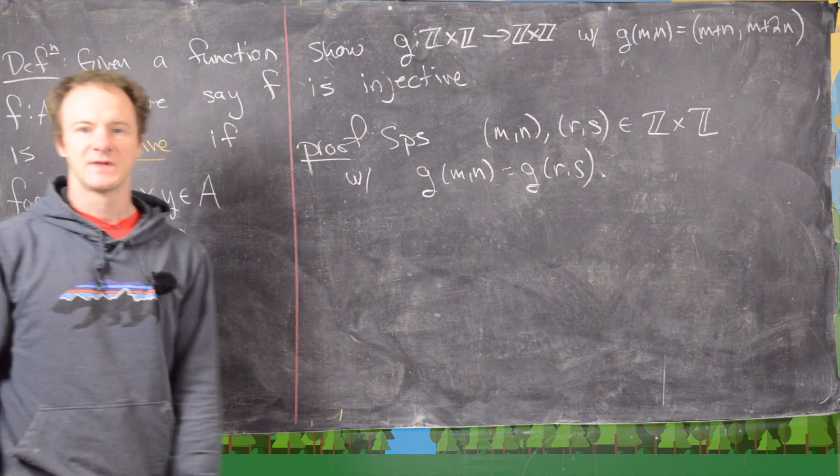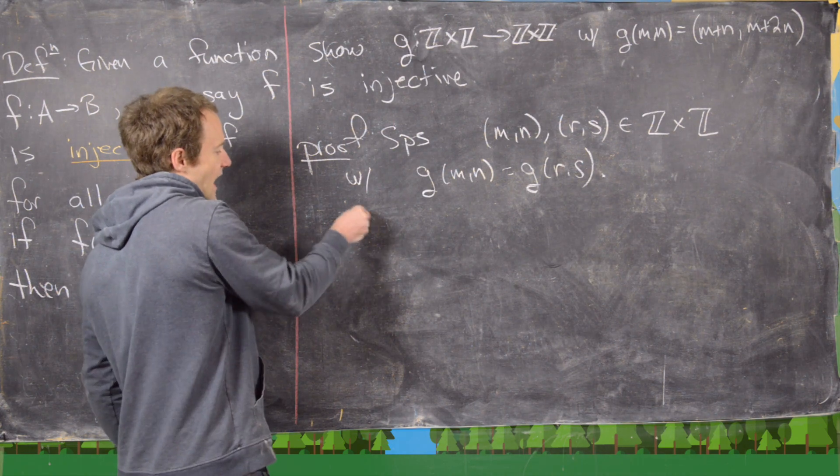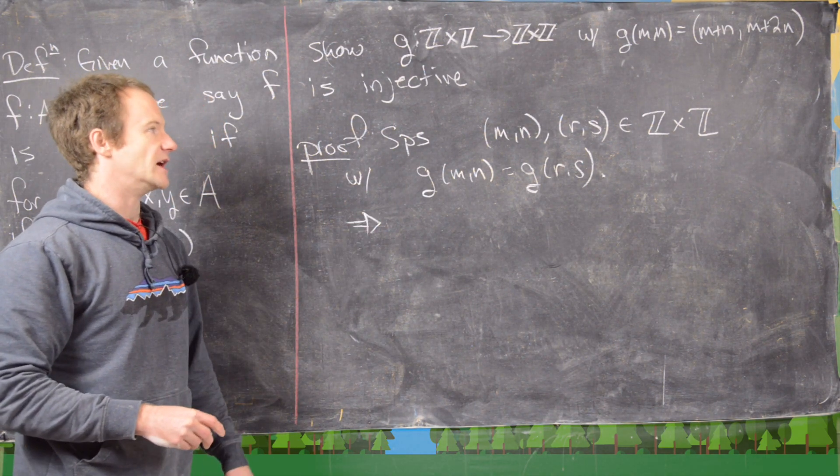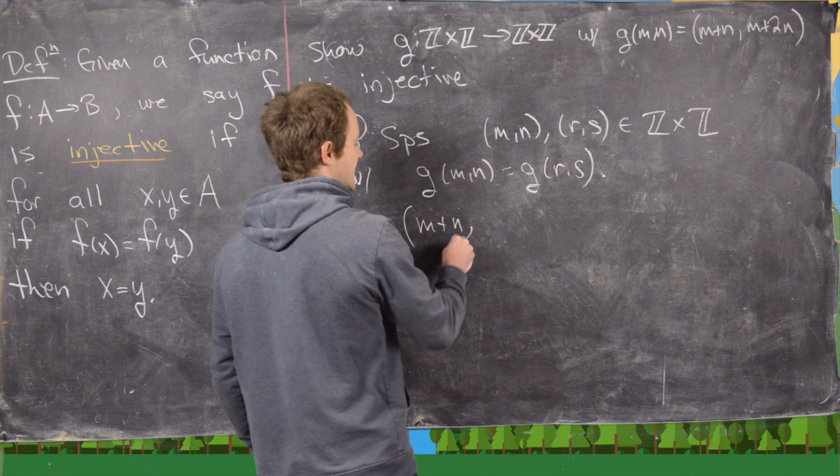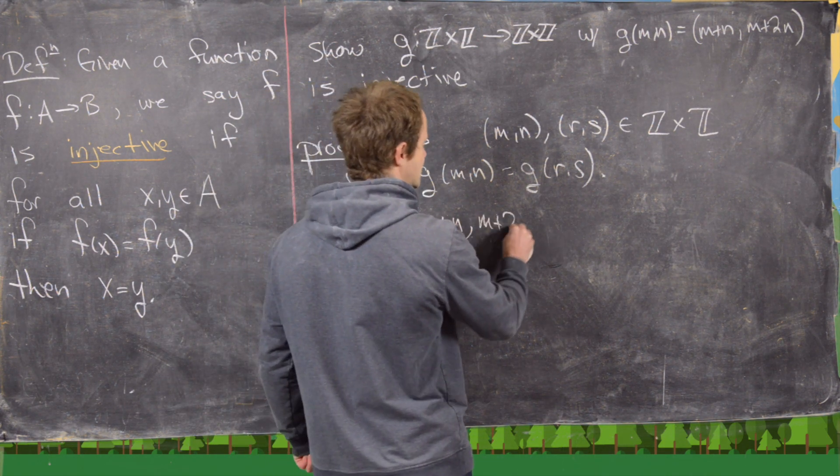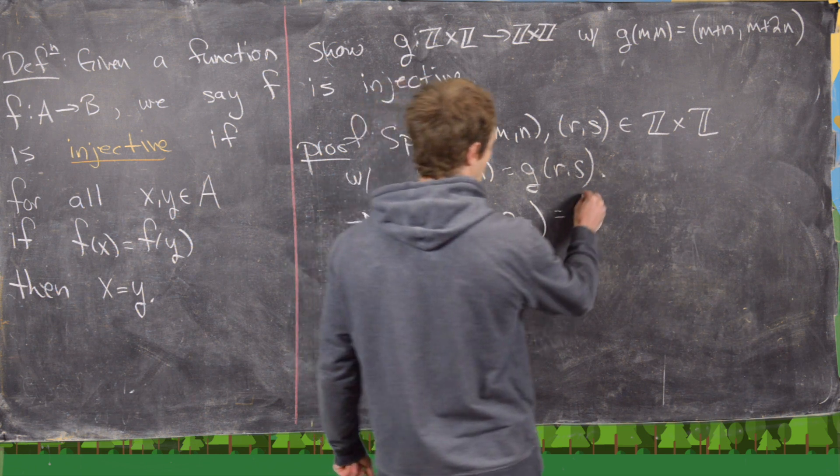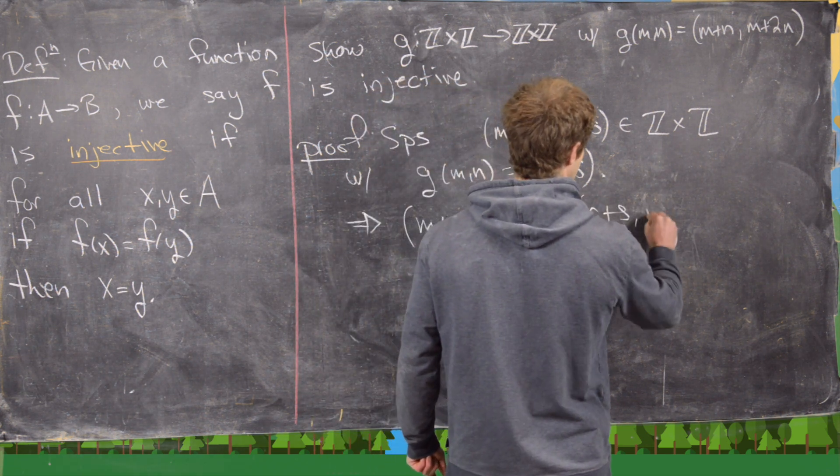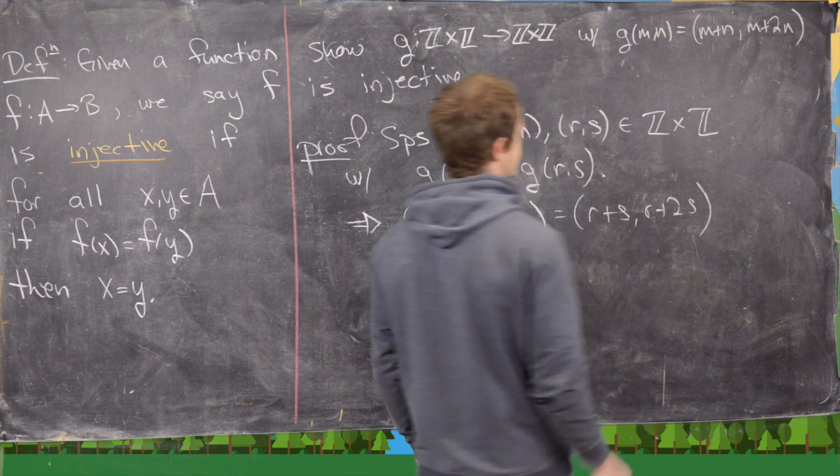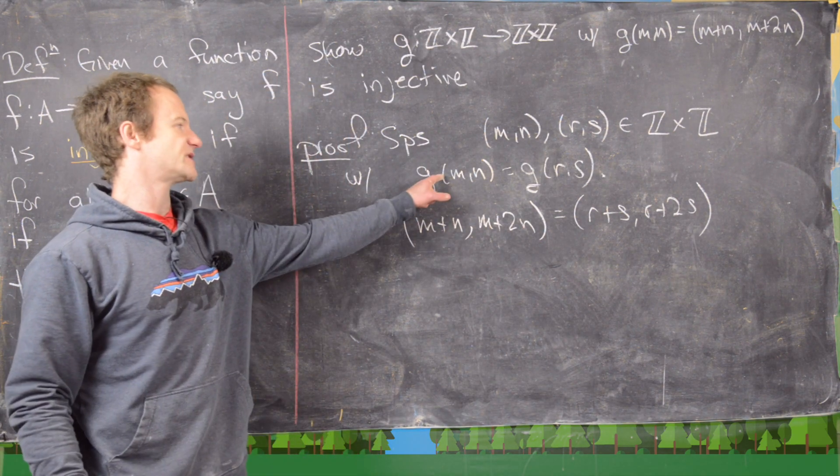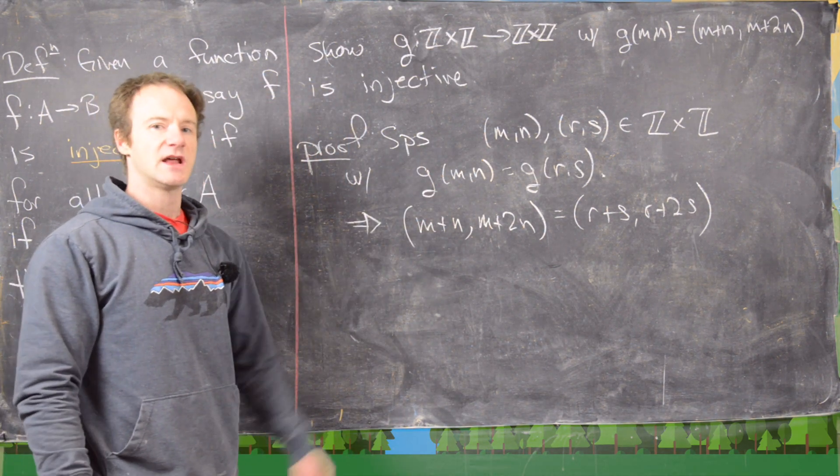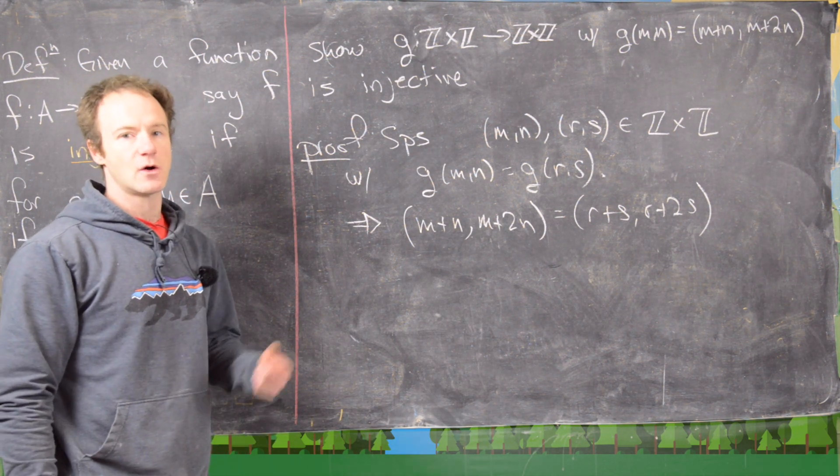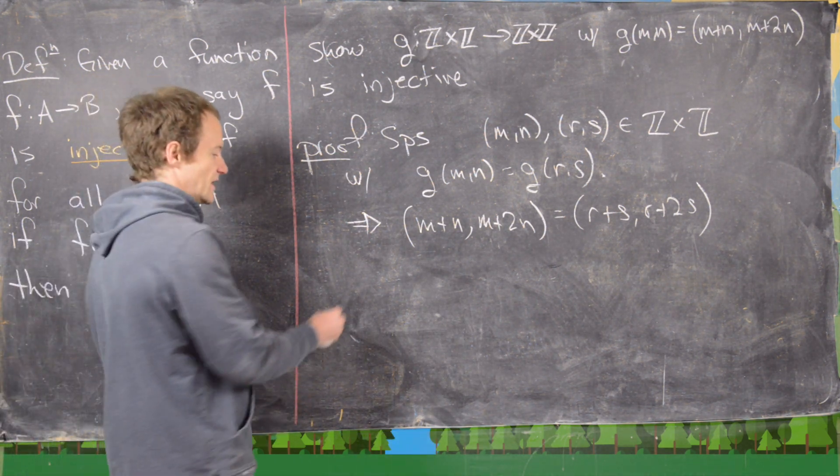And so from there, we can apply the formula that defines g. And that tells us that we have the ordered pair m plus n and then m plus 2n equals the ordered pair r plus s, r plus 2s. And that's just given by this left-hand side and this right-hand side. But then let's recall that ordered pairs are equal if and only if their entries are equal.